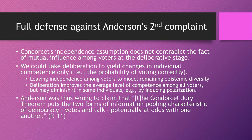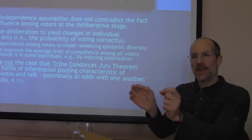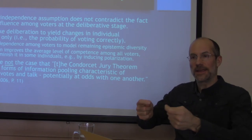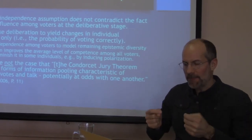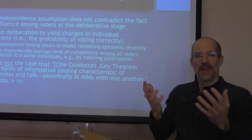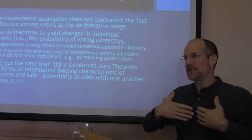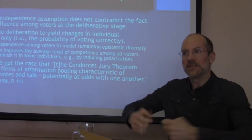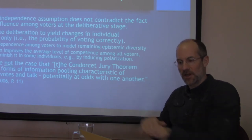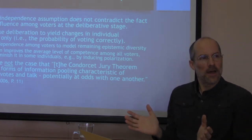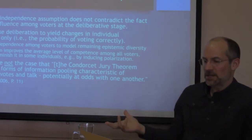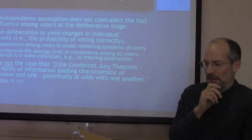I think I can offer a full defense against Anderson's second complaint — that the independence assumption actually contradicts the fact of mutual influence among voters at the deliberative stage. We can interpret deliberation as not affecting whether their votes are independent, but instead affecting only their probability of making the right decision. So basically, we all deliberate, and as a result all of us, or maybe most of us, become a little bit more likely to make the right decision — but still, at the voting stage, our votes are independent. There's no necessary contradiction between the independence assumption and the value or the fact of mutual influence in deliberation.